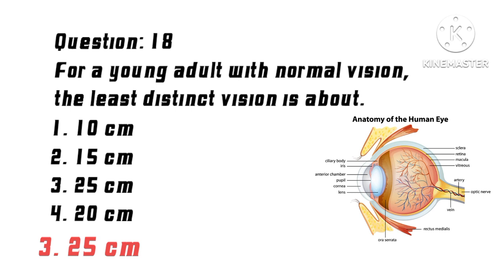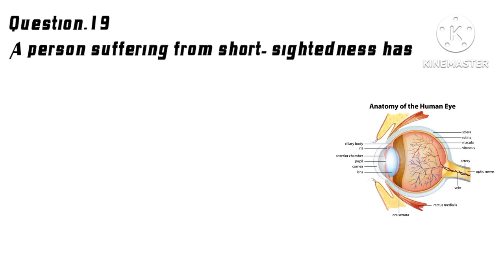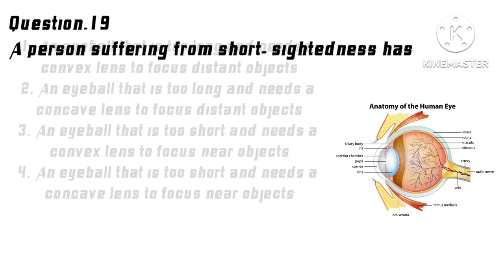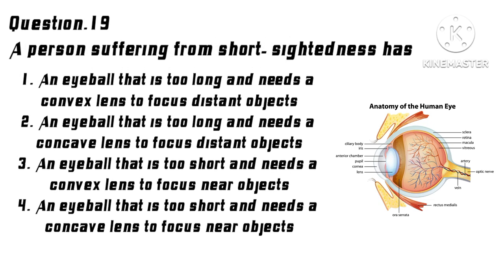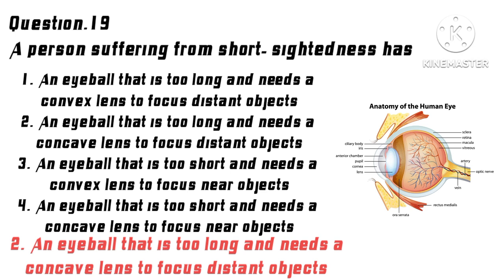Question 19: A person suffering from short-sightedness has? Options: 1. An eyeball that is too long and needs a convex lens to focus distant objects, 2. An eyeball that is too long and needs a concave lens to focus distant objects, 3. An eyeball that is too short and needs a convex lens to focus near objects, 4. An eyeball that is too short and needs a concave lens to focus near objects. Correct answer: 2. An eyeball that is too long and needs a concave lens to focus distant objects.